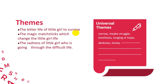Next there is theme. I found three themes suitable for this story: the first is the bitter life of the little girl to survive; the second is the magic match sticks which change the little girl's life; and the third is the sadness of the little girl going through a difficult life. I think these are very suitable themes for the story. The universal themes include sorrow, struggle, loneliness, longing or hope, and darkness.